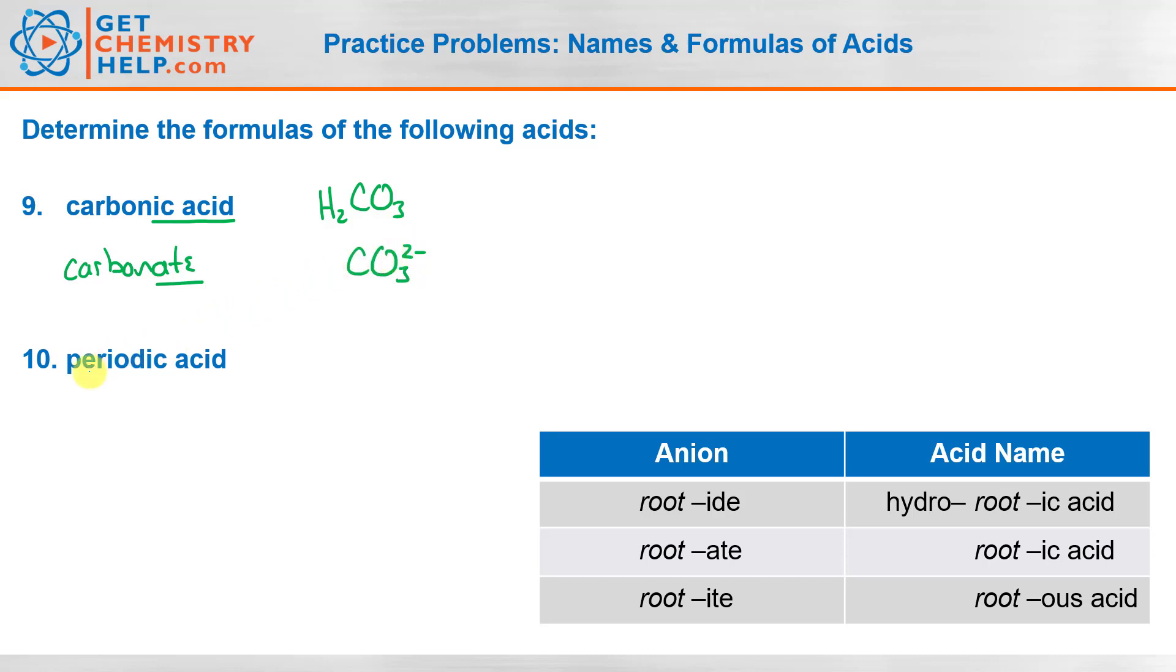And our last one, periodic acid. It looks like periodic acid, but it's actually pronounced periodic acid. And I'll show you why in a second. So ic acid, again, we just saw that means it comes from ate. So periodic must have come from periodate. So this per tells me we gained one oxygen compared to just iodate itself.